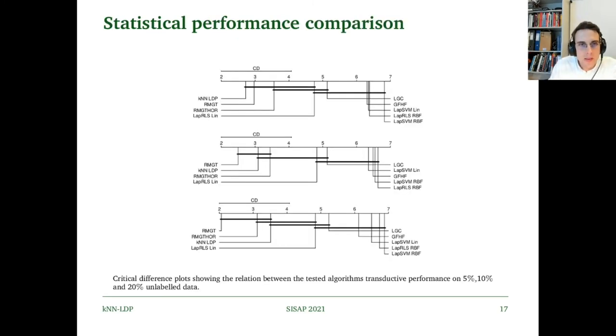If we compare the evaluated algorithms statistically using critical difference plots, we can see that KNN-LDP is on top when we only have 5% labeled data, followed by RMGT and RMGT-Thor. Notice that KNN-LDP is significantly better than LGC and GFHF, LapSVM using the linear kernel and the RBF kernel, as well as LapRLS using the RBF kernel.